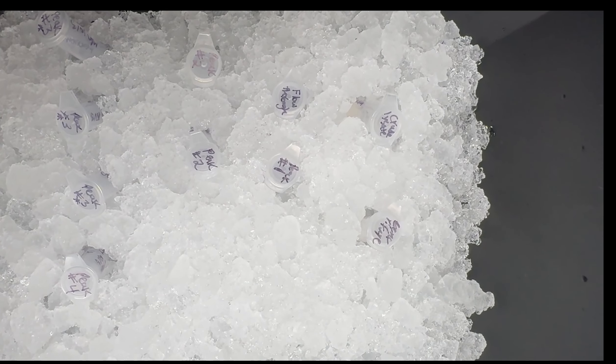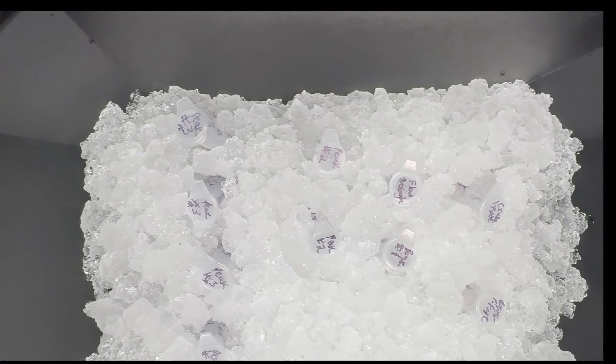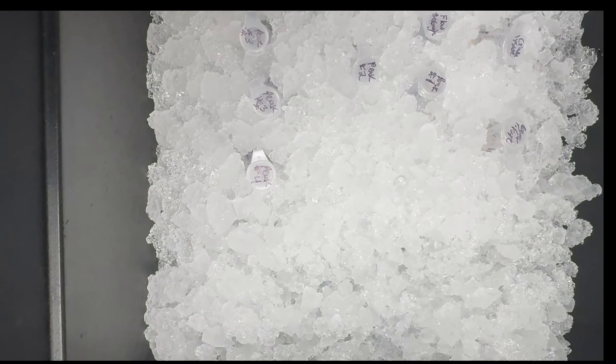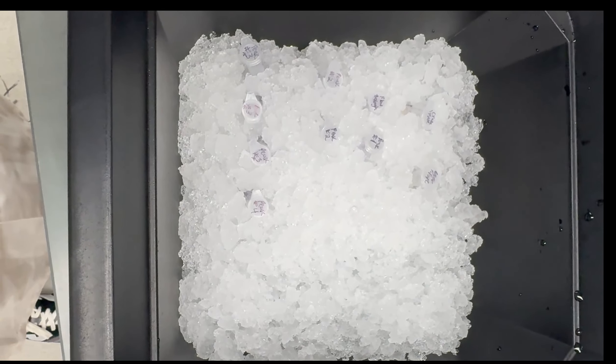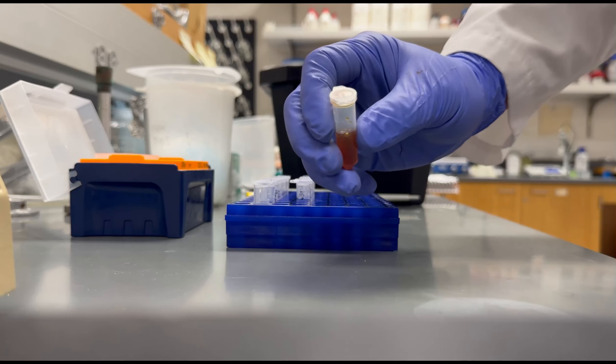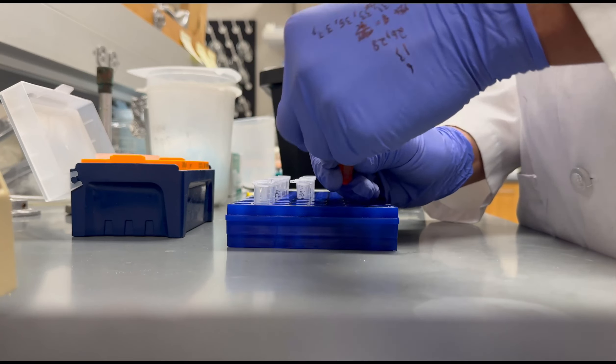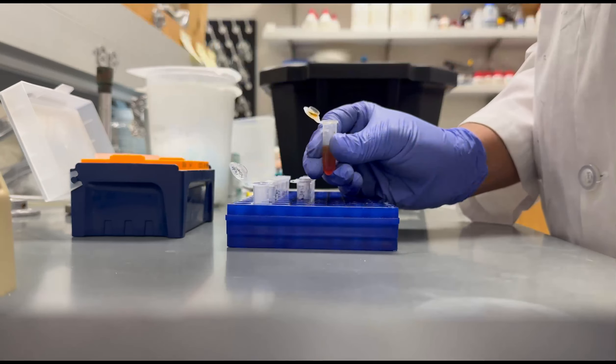To begin the procedure, you will need to take out your previously saved 30 microliter samples from each step of the purification process out of the freezer and begin thawing on ice. Each of these samples will be mixed with approximately 7 microliters of 5X loading dye. This dye contains SDS and beta-mercaptoethanol.